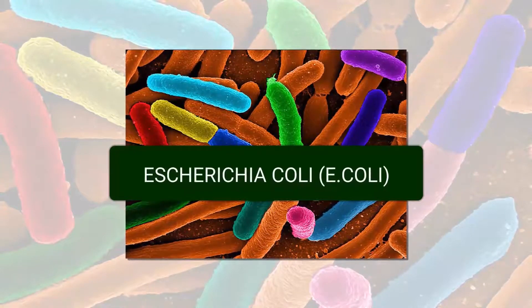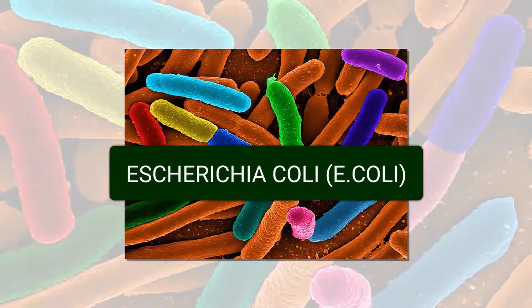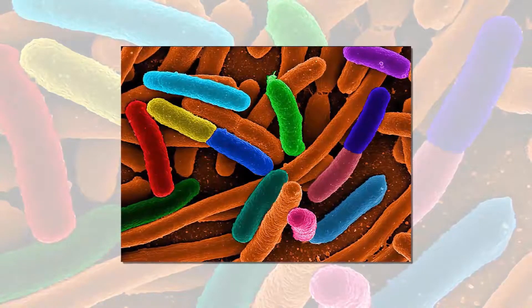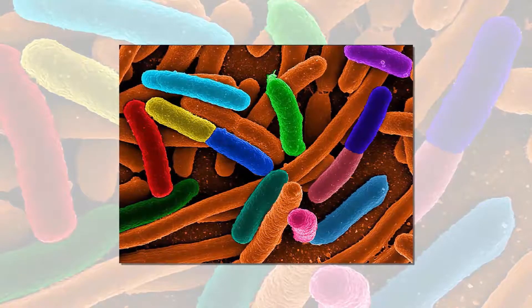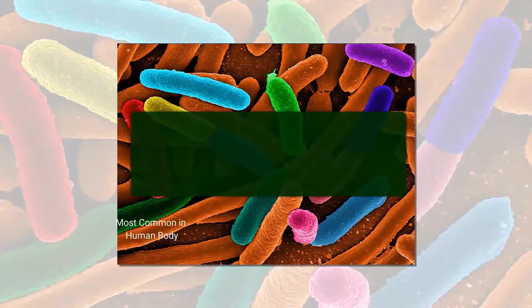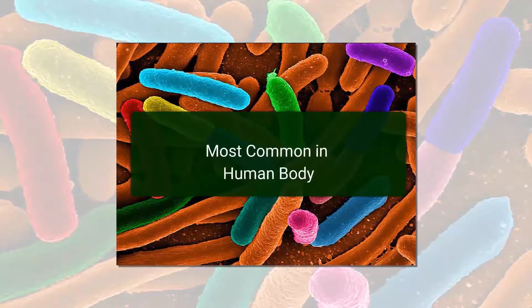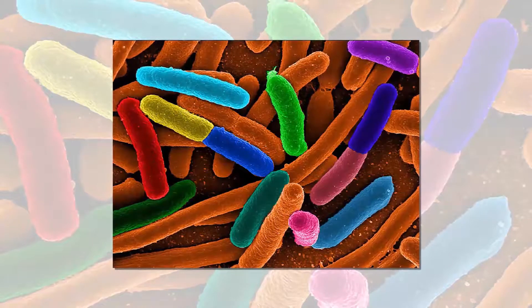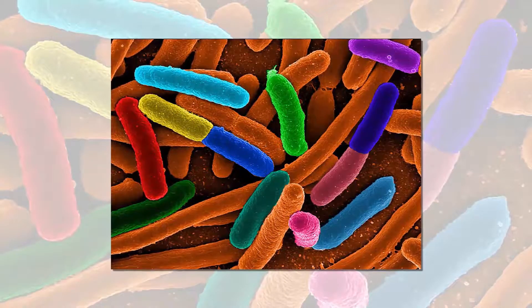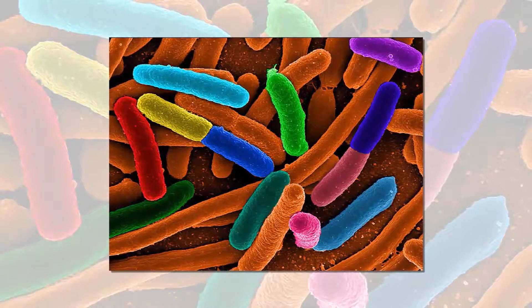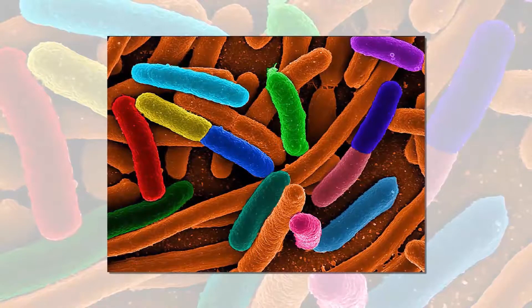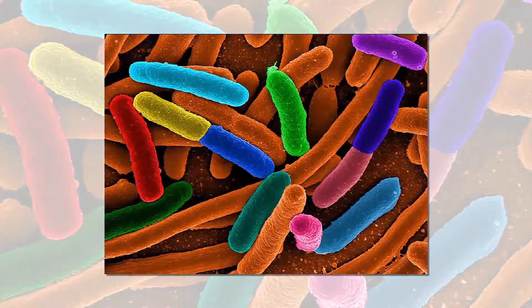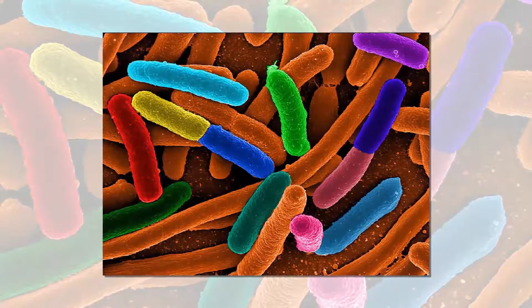Escherichia coli — this bacteria was first documented in 1895. E. coli is the most common bacteria found in the human body. Most E. coli is completely harmless and survives happily in the human digestive system. However, some strains of E. coli can cause serious illness and most commonly lead to severe food poisoning as well as meningitis and infections.